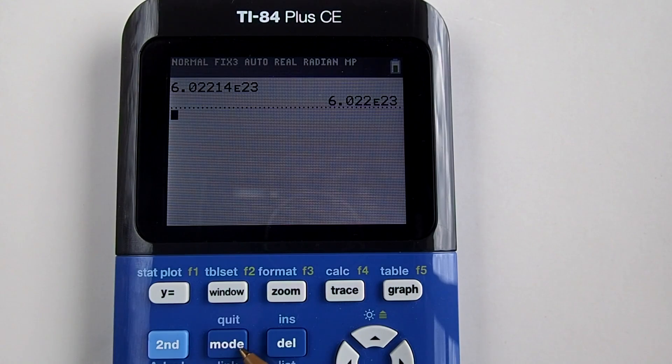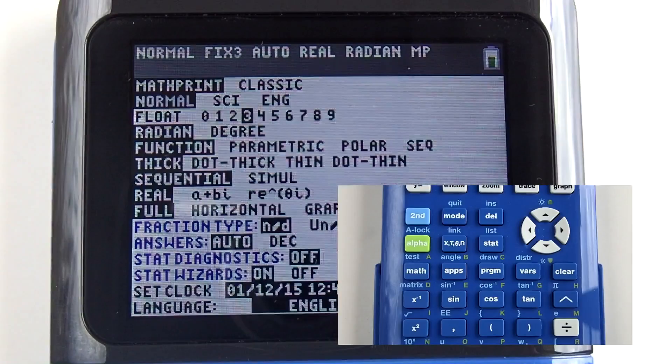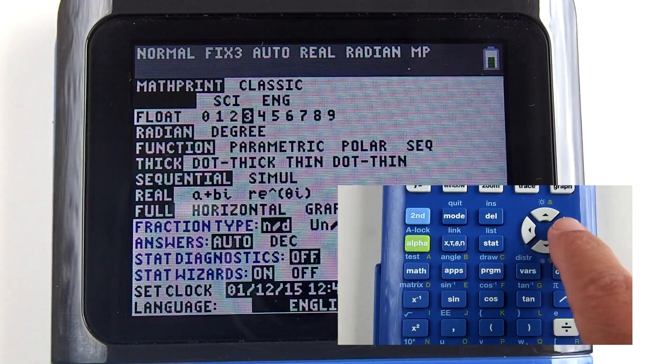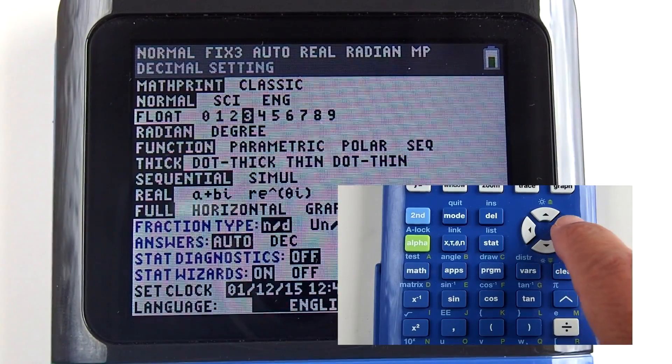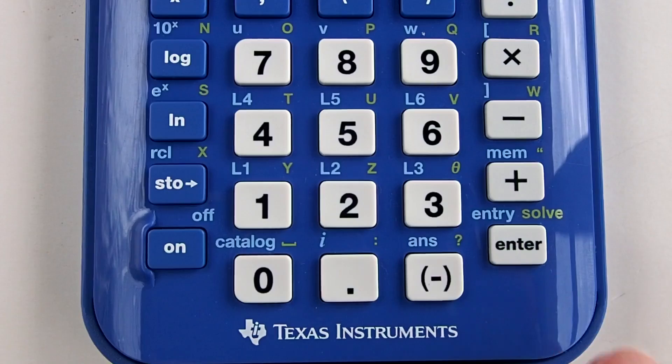To change the decimal float, press the mode key here. Using the arrow keys, go down to the float, then to the right. Choose how many decimals you want to display. I will choose 9. Press enter.